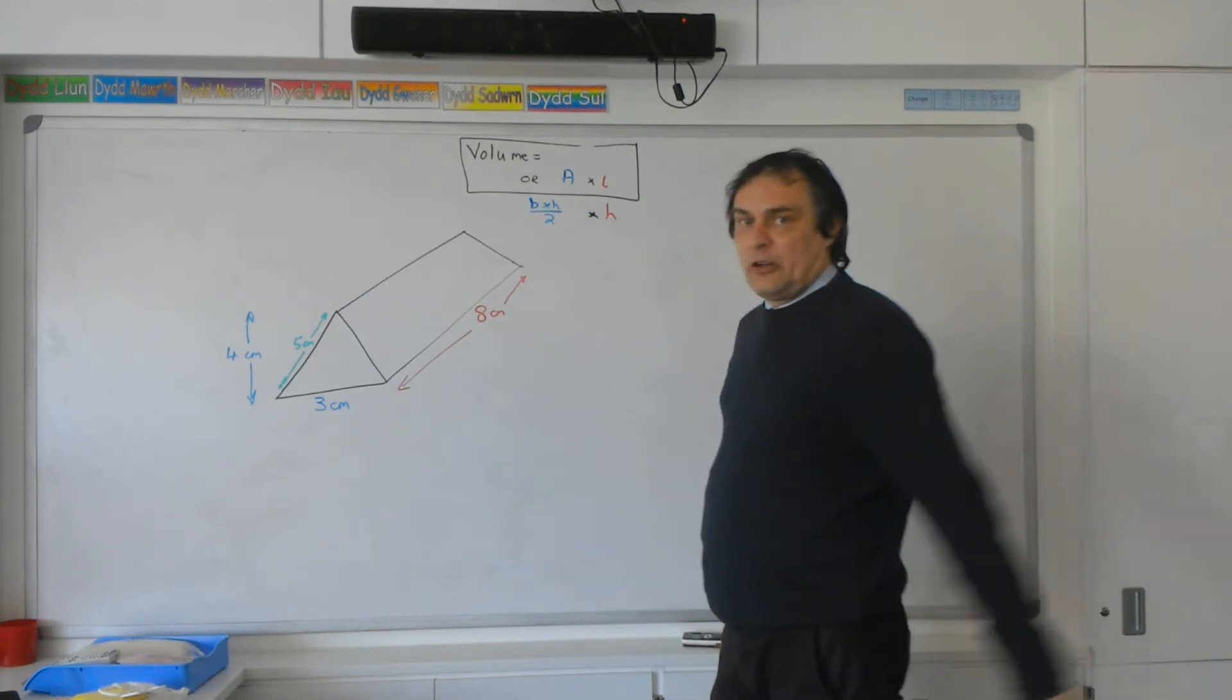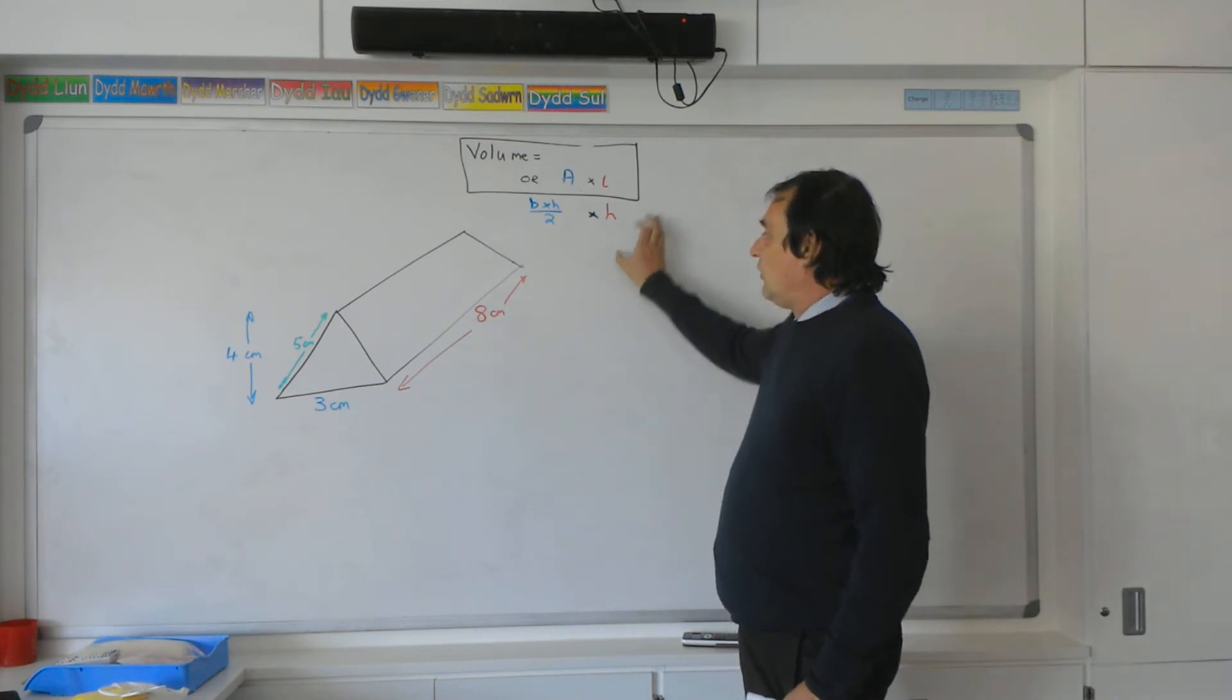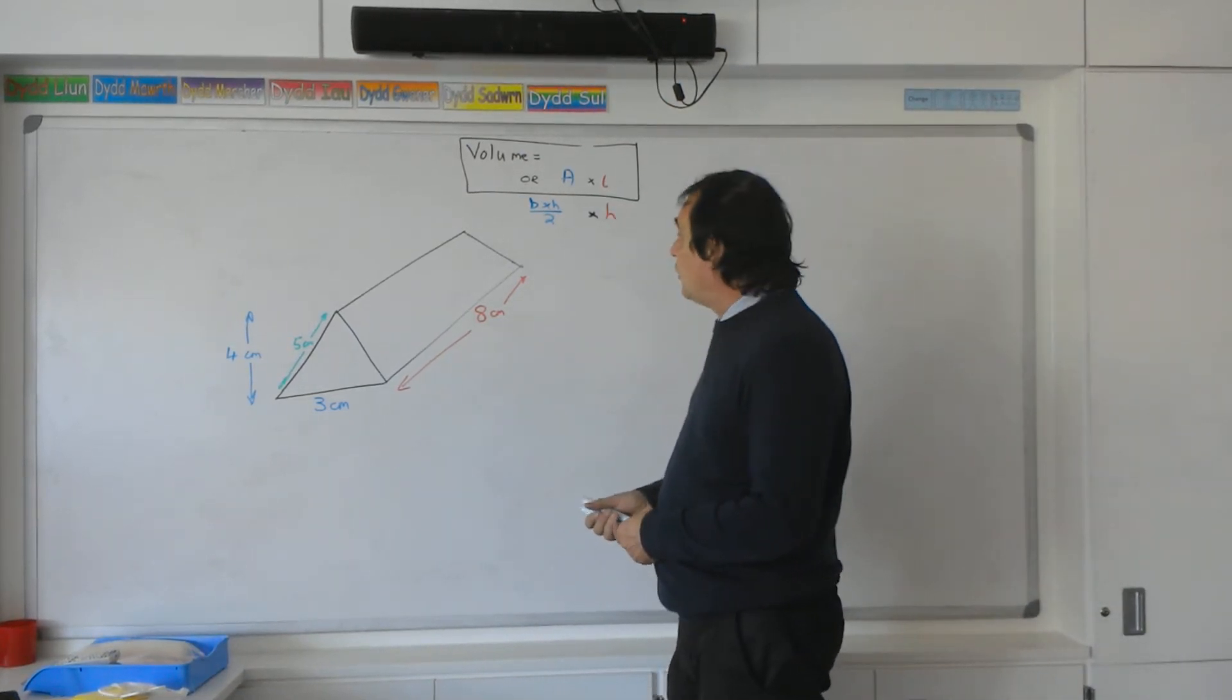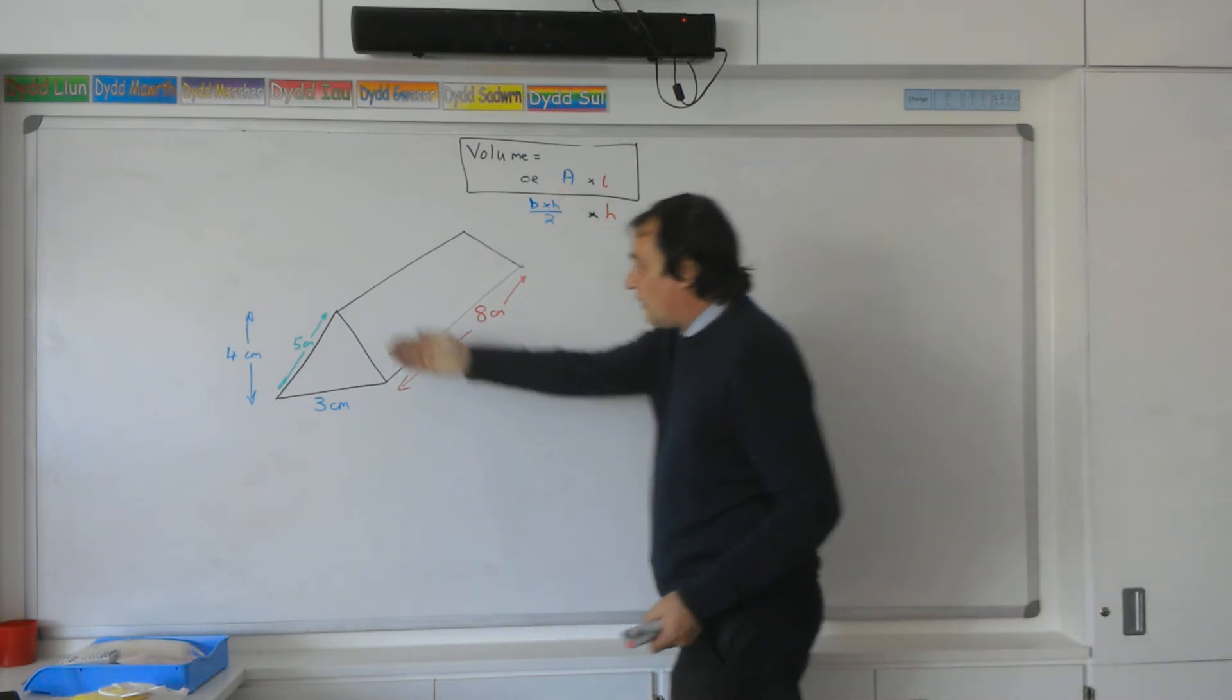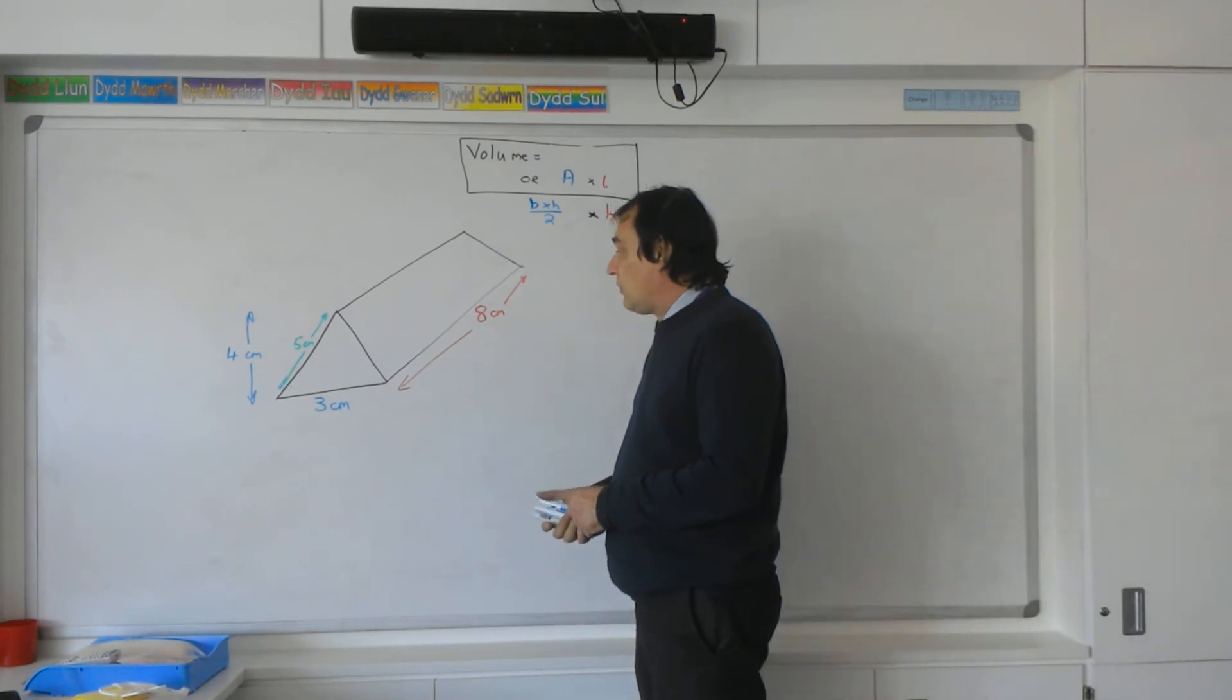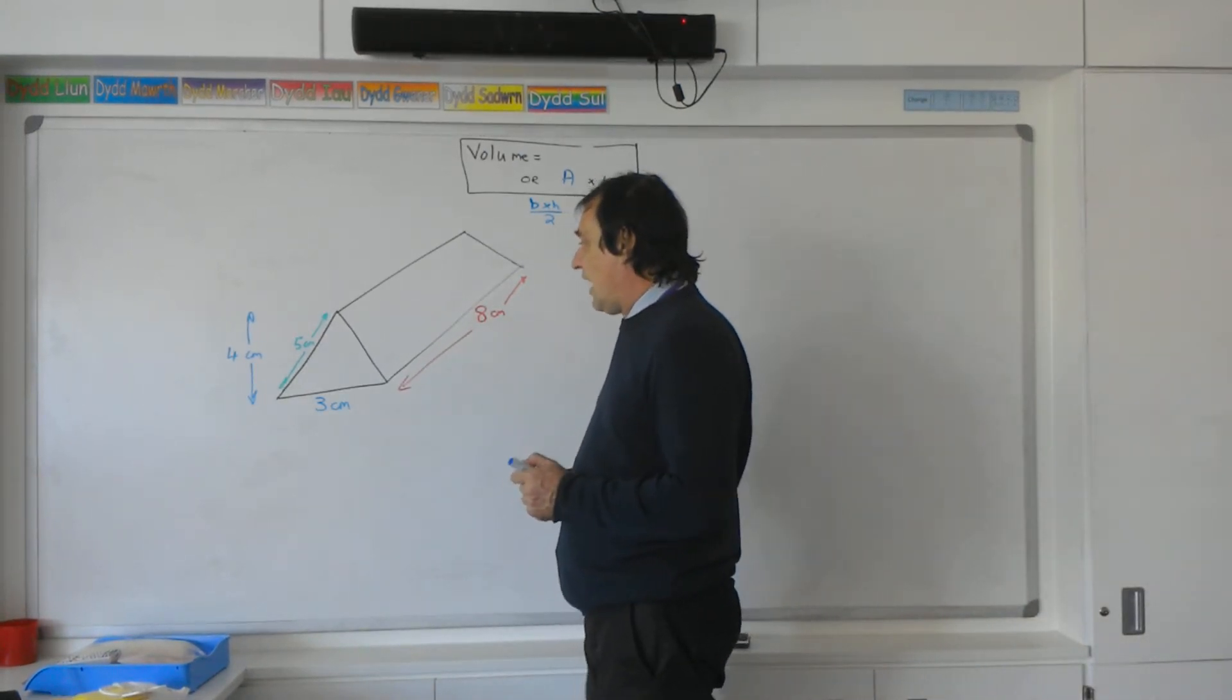We're going to look at how we work out the volume of a triangular prism using these formulas here. We've done prisms in other lessons, such as cylinders and cuboids. The prism formula is the cross-sectional area—that's this face here—times the length that it goes back. In the case of a triangular prism, you guessed it, the area is going to be a triangle. So what we've got to do first is work out the area of that triangle.